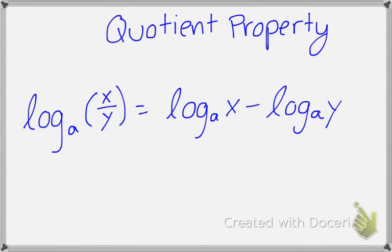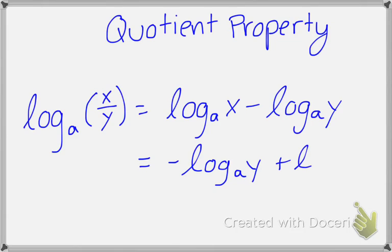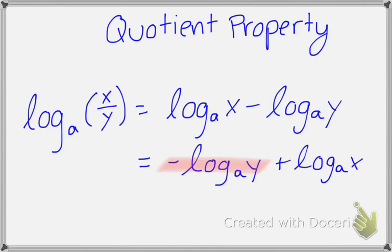Because you may see your logarithms written in a different order. Notice you have the same two logarithms — negative log base a of y and positive log base a of 4 — and you would end up with the same solution. So just know that negative logarithms bring the value to the denominator, and positive logarithms bring the value to the numerator.